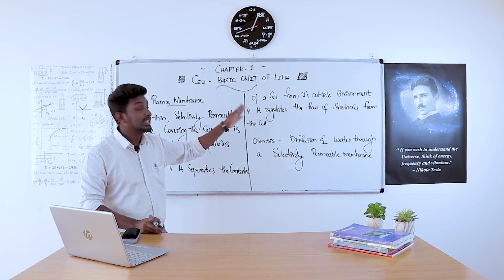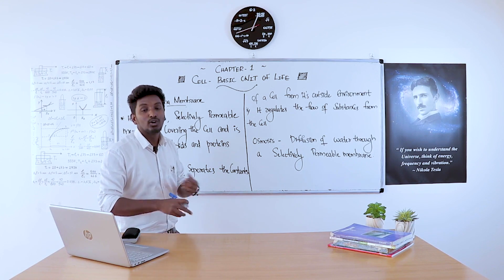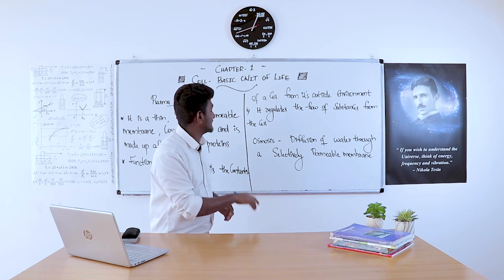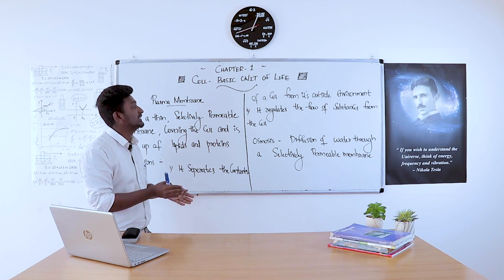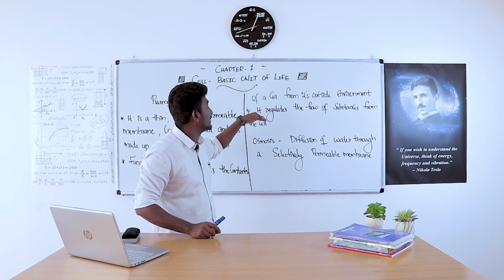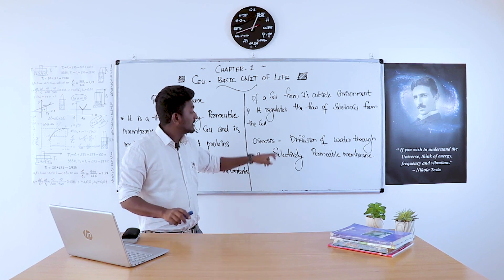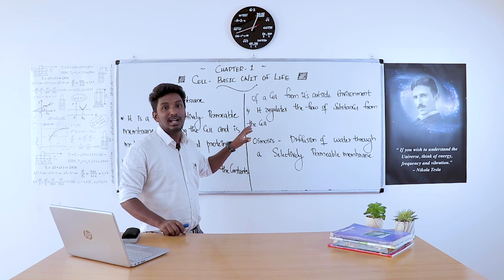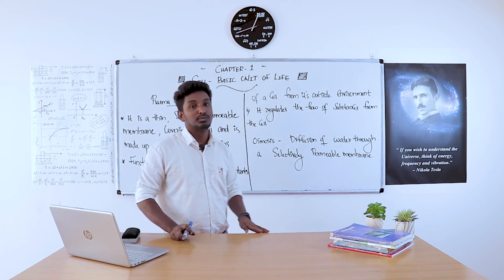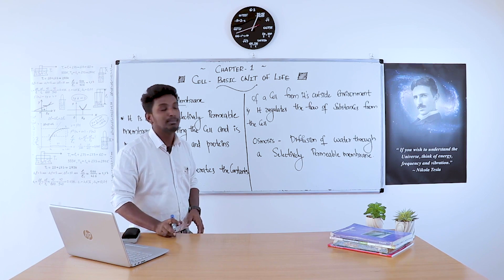The second function of the plasma membrane is that it regulates the flow of substances into and out of the cell. So we have two functions for the plasma membrane. An additional topic from this section is osmosis. Osmosis is simply the diffusion of water through a selectively permeable membrane.